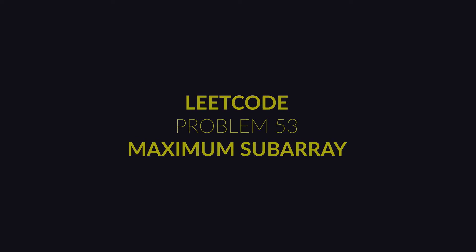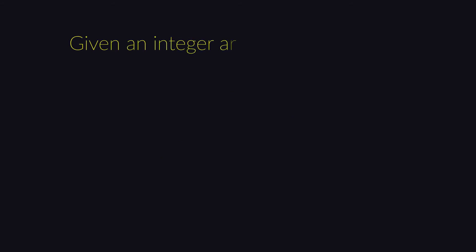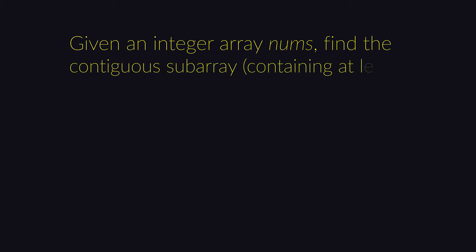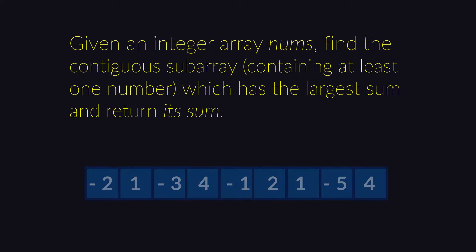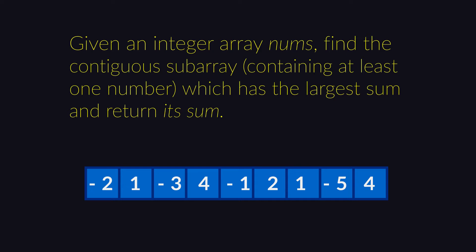Let's start with the problem statement. Given an integer array nums, find the contiguous subarray containing at least one number which has the largest sum and return its sum. Let's take the same example from LeetCode to clarify the question. Suppose you have an array with these elements — what is the maximum sum possible in the subarray? In this example, the maximum sum of subarray possible is 6. There are no other sequences in the array whose sum would be greater than 6.